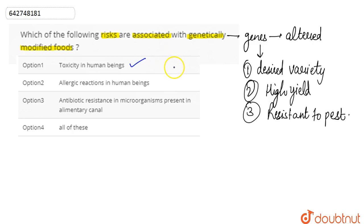So this is even correct - allergic reaction can also be seen in human beings. And lastly, antibiotic resistance in microorganism present in the alimentary canal.